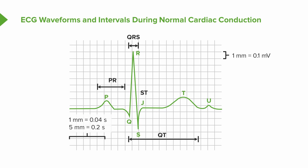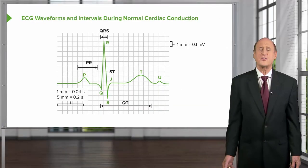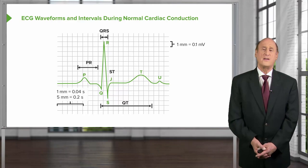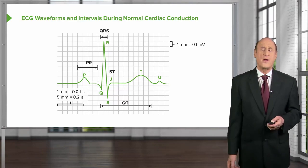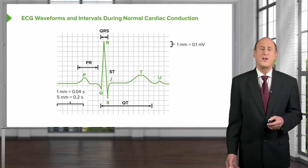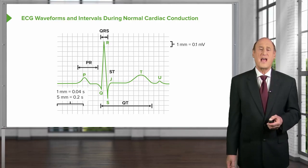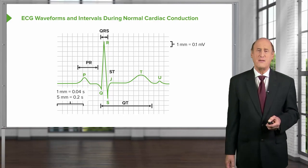Then you have something called the ST segment, which is a little pause before the ventricle resets itself. The resetting is the T wave. Some patients will have a U wave following the T wave—this can be normal. It's absent in most electrocardiograms, and it is a little more commonly seen when patients have low blood potassium, so-called hypokalemia.